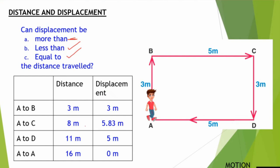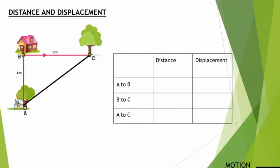Now let's solve another question. We have a right-angle triangle, right-angled at B, and a cyclist travels the path. From A to B, the distance traveled is 4 meters and the displacement is also 4 meters, since the initial and final positions match. From B to C, the distance traveled is 3 meters and the displacement is also 3 meters.